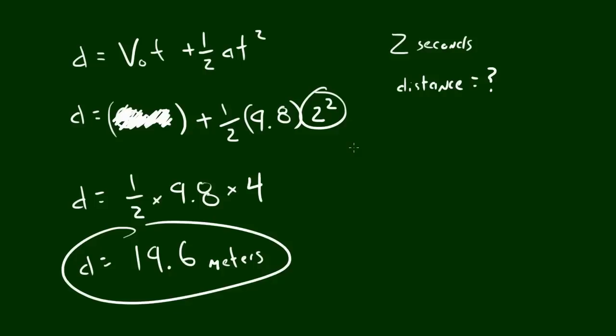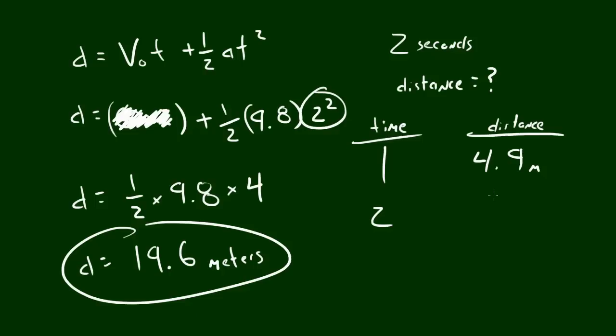So again, if you are standing on the top of a building and you drop a tuna can and it falls for 2 seconds, after 2 seconds that tuna can is going to be 19.6 meters away from you. So after 1 second, after 1 second of falling, it is going to be, what did I say, 4.9? 4.9 meters. And after 2 seconds, it's going to be 19.6 meters.